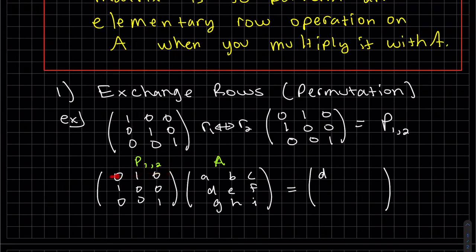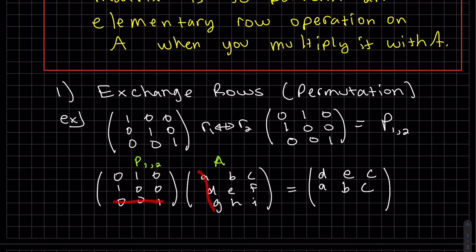This times this, we'll get E in the next spot. And there you have it. The two rows were exchanged, rows one and two.